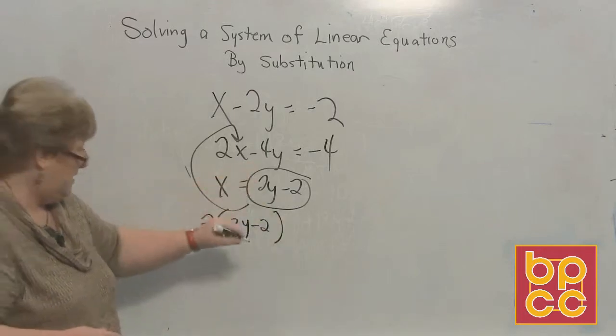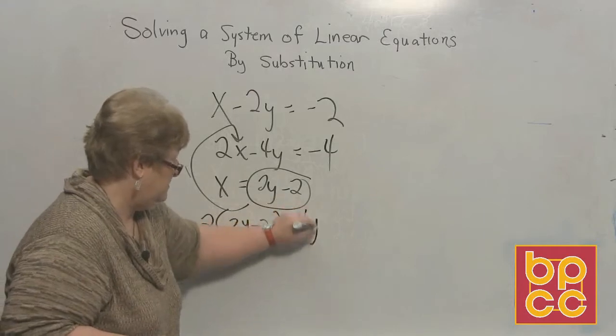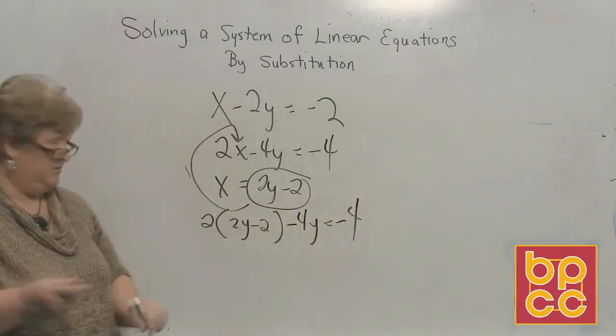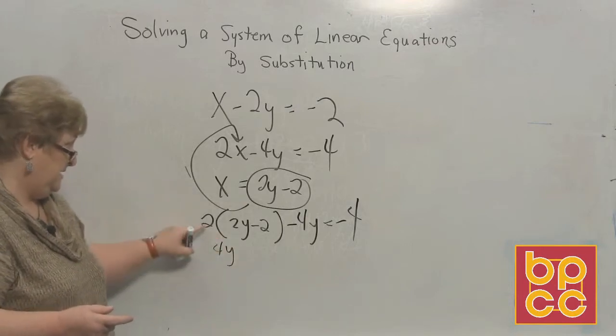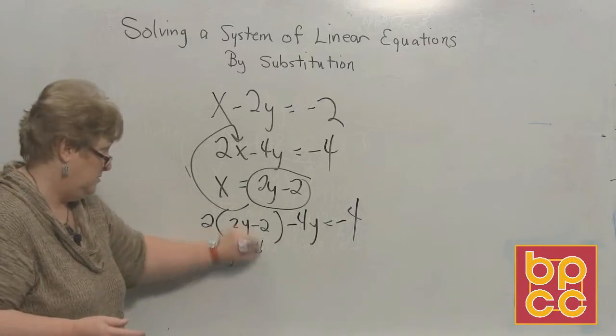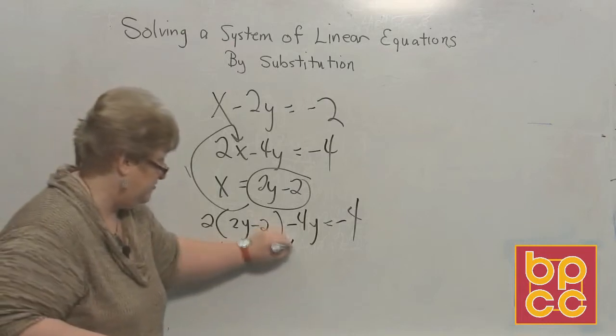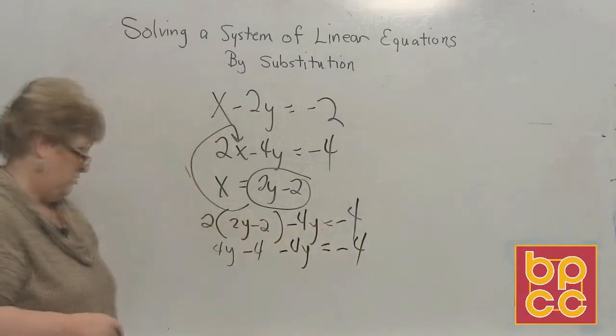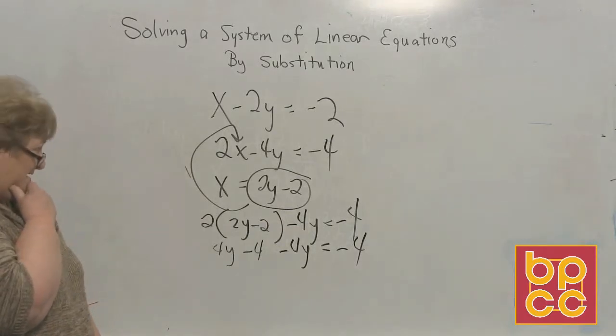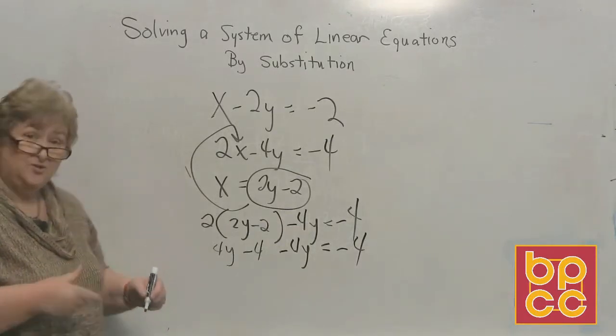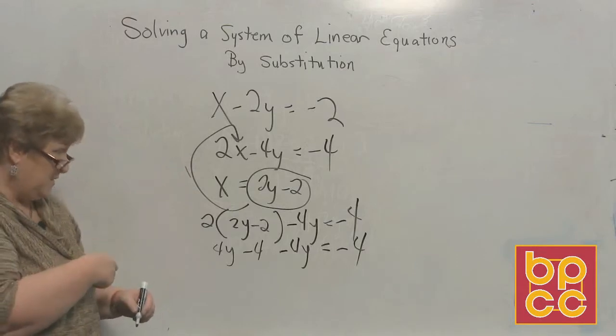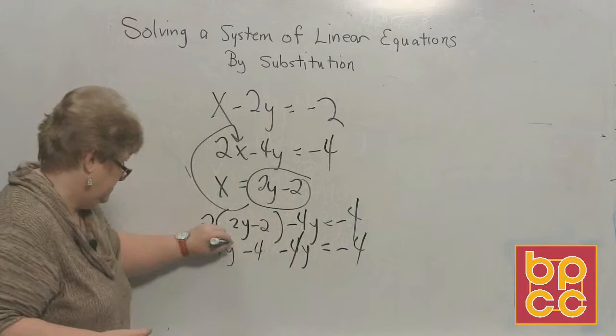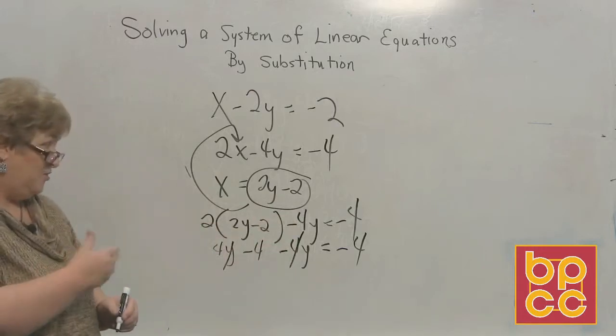Now, minus 4y. Minus 4y equal negative 4. It's time to distribute. So we have a 4y here, a negative 4. Then we have a negative 4y. Then we have equal a negative 4. Let's look and see what we've got here. The y's are on the same side. One is positive. One is negative. Those clear out. Now, we have a negative 4 equal a negative 4.